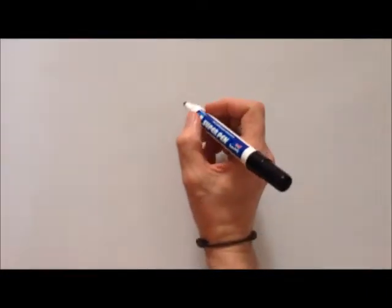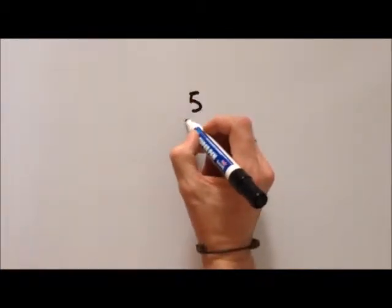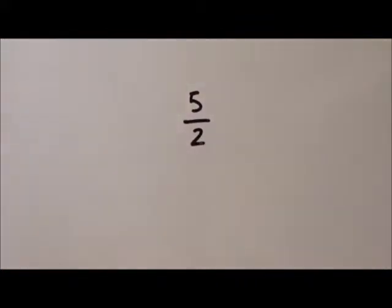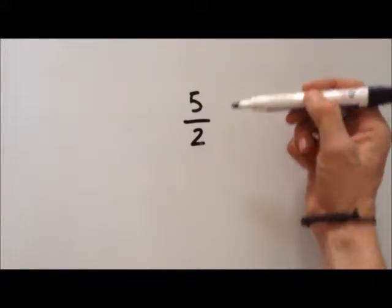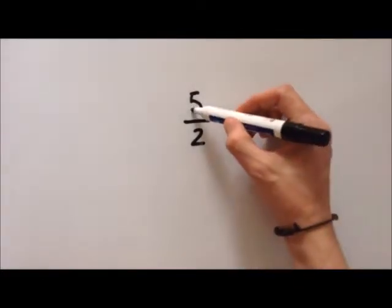So let's take a top heavy fraction: 5 over 2. So it's top heavy because the numerator is larger than the denominator. So how do we solve this problem then? How do we make this into a mixed number?